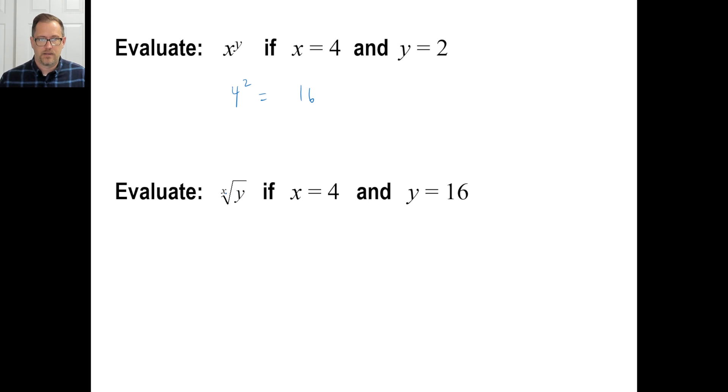Let's try d. The x root of y, if x is 4, x is 4, and y is 16. There you go. In other words, they're asking you, what number times itself 4 times gives you 16? The answer is 2. The only thing it could be.